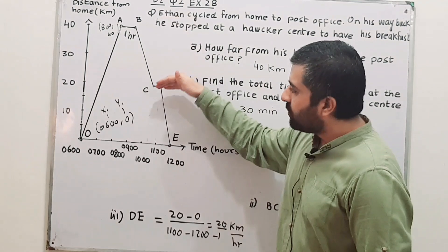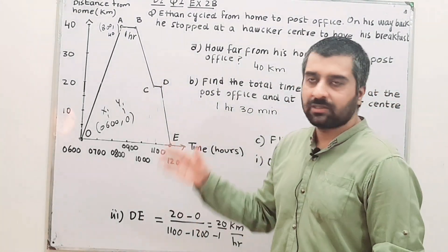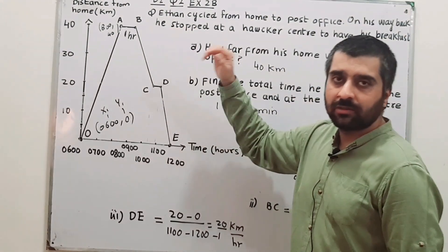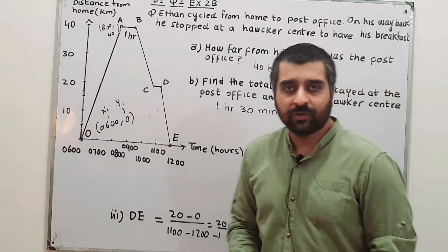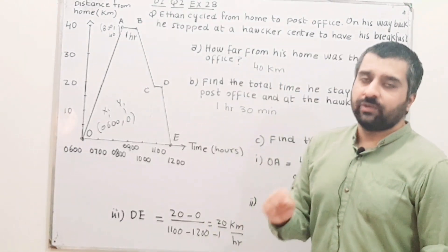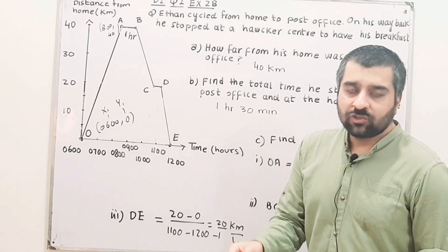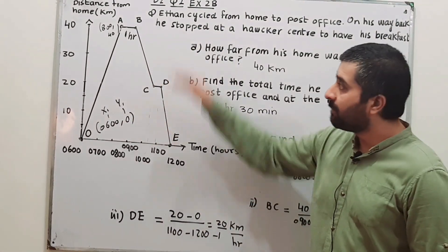Now from B to D, you have to find the gradient and tell what this gradient shows. From B to D, again use the formula y2 minus y1 divided by x2 minus x1, where y1, x1 and y2, x2 are coordinates of B and D respectively. B and C.